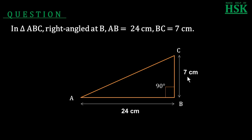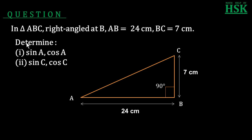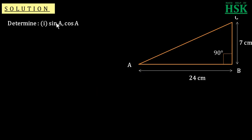In this question we have to determine the value of sine A, cosine A — that is sine of angle A and cosine of angle A — and in the second part, sine C and cosine C. To solve this question, firstly we calculate AC. To calculate the trigonometrical ratios sine A and cos A, it is necessary that we know side AC. With respect to the 90-degree angle, the side opposite to it is known as the hypotenuse, so this hypotenuse is to be calculated.